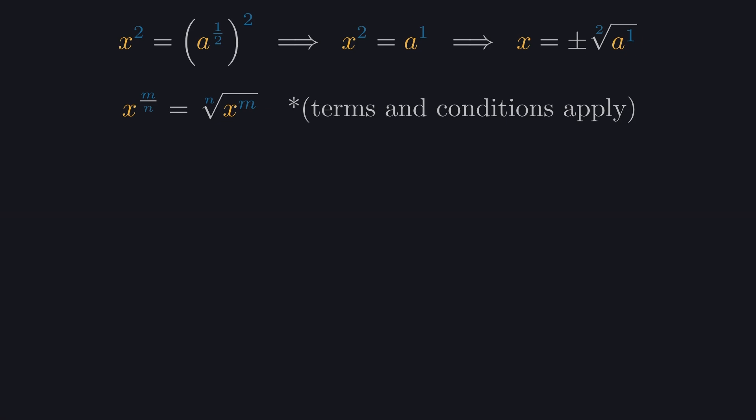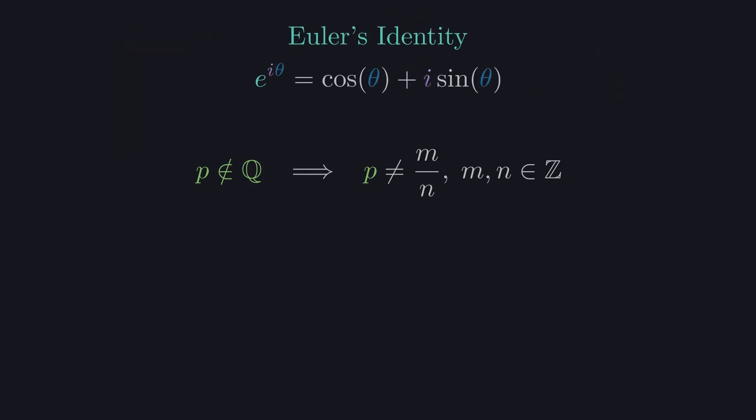This decomposition into a root and the power does not work for irrational powers, because they're not fractions. That's kind of their whole deal. But Euler's identity sidesteps this issue.